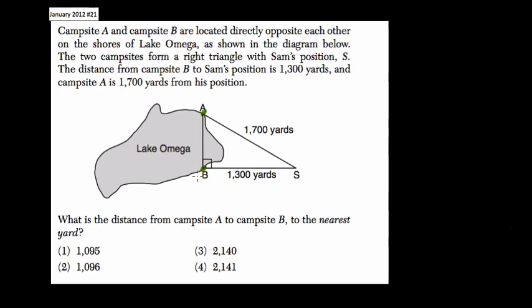What else are we told? The two campsites form a right triangle with Sam's position S. The distance from campsite B to Sam's position is 1,300 yards, labeled right here. The distance from campsite A to S is 1,700 yards, also labeled.